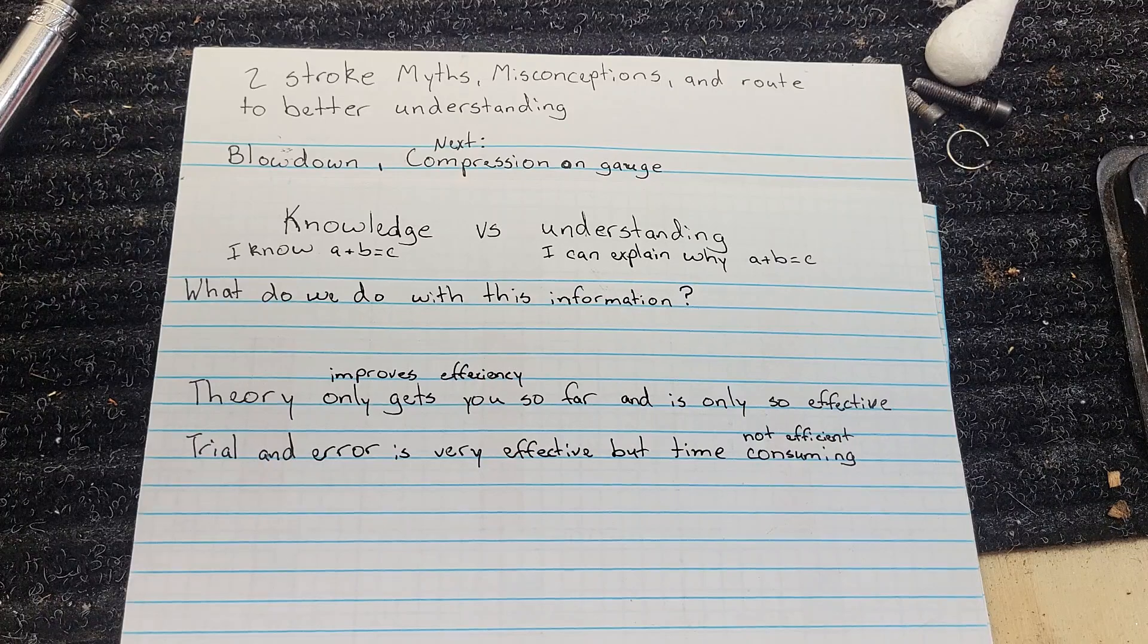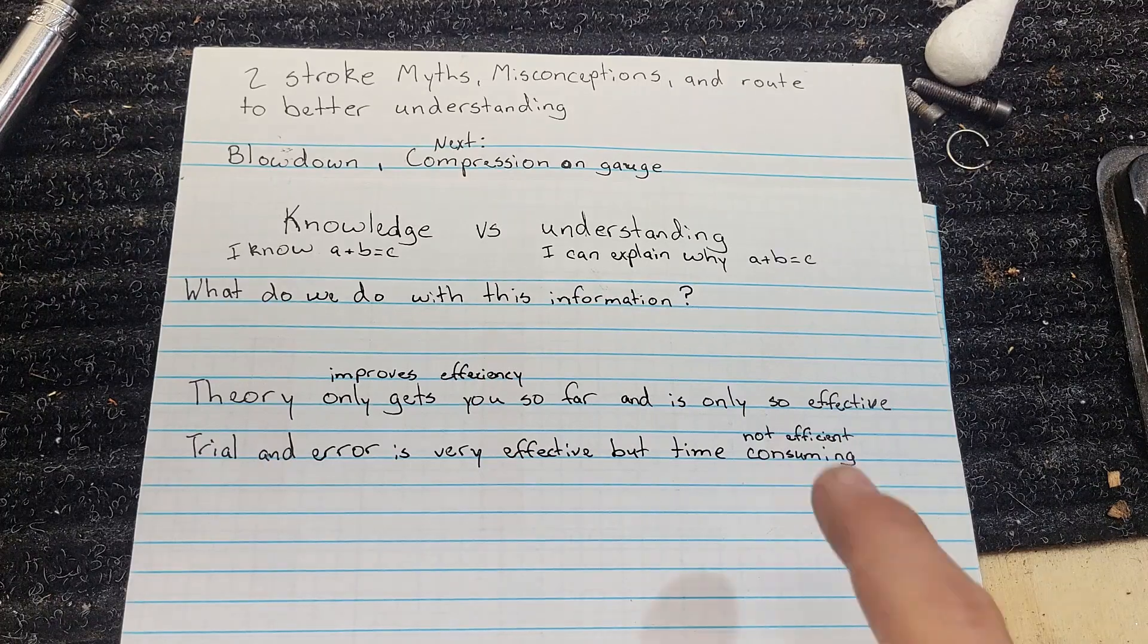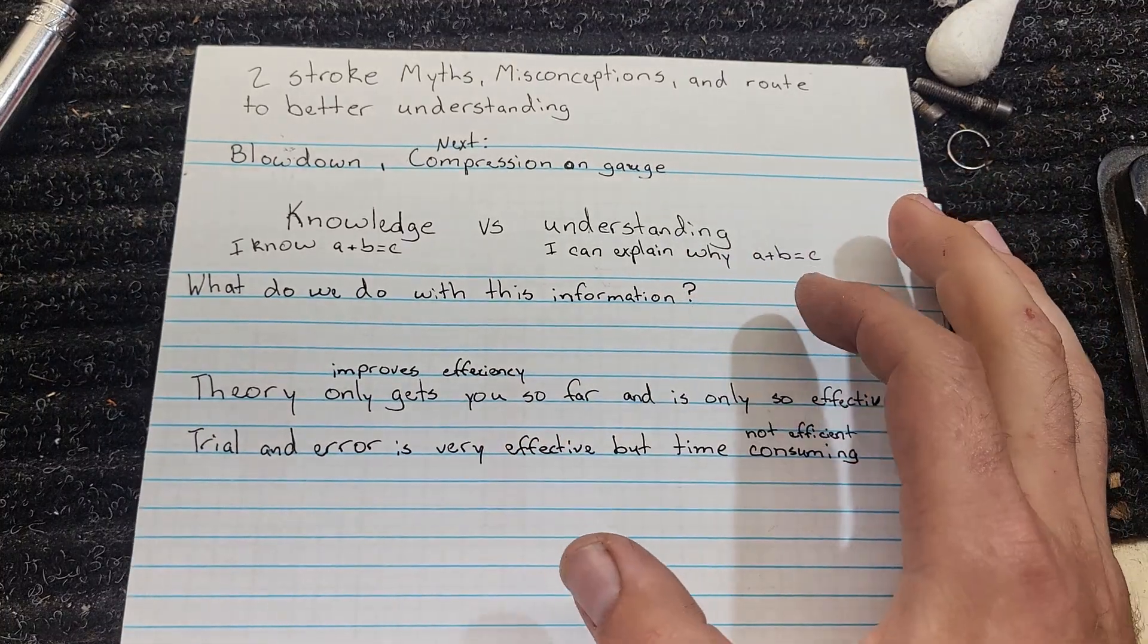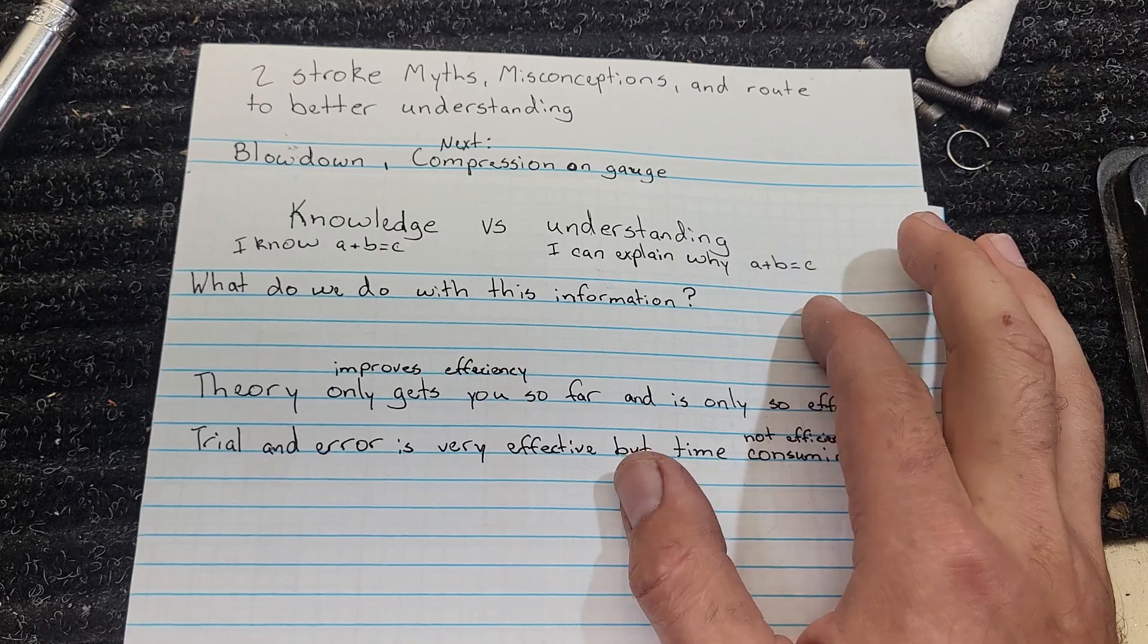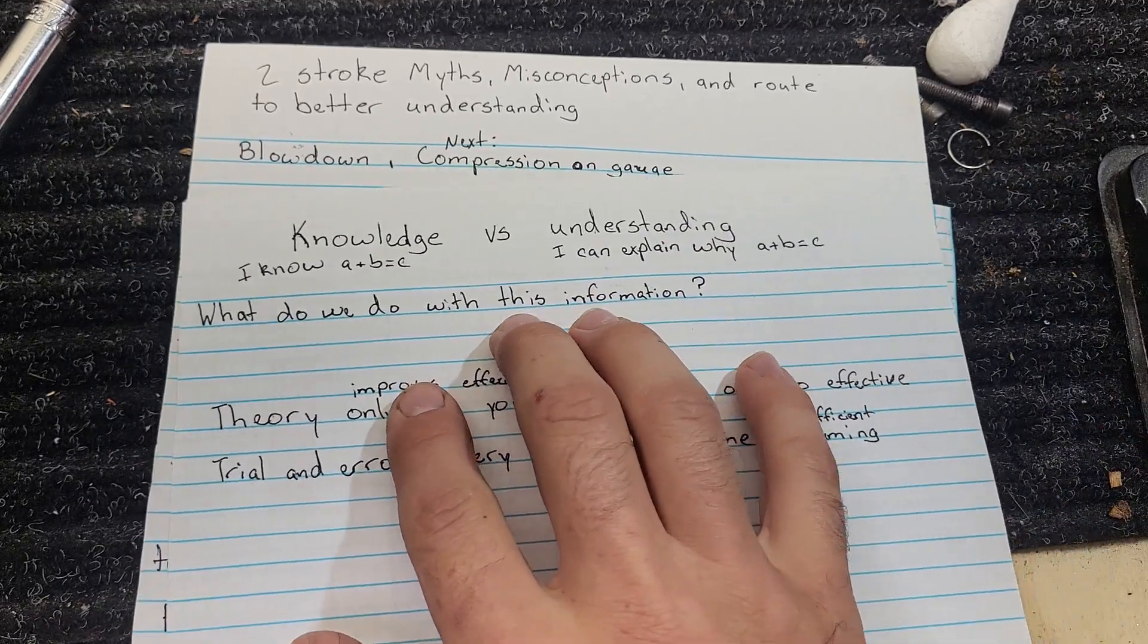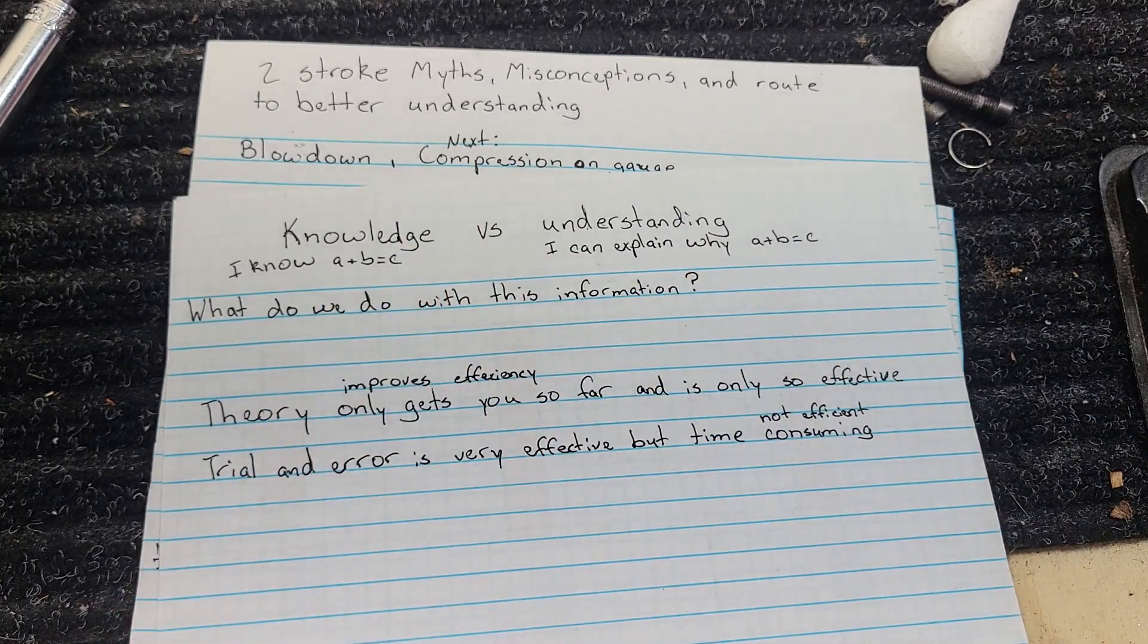Hopefully give everyone else a better understanding. Understanding is being able to explain what's happening. I can tell you why A plus B equals C. Knowledge is just knowing A plus B equals C.